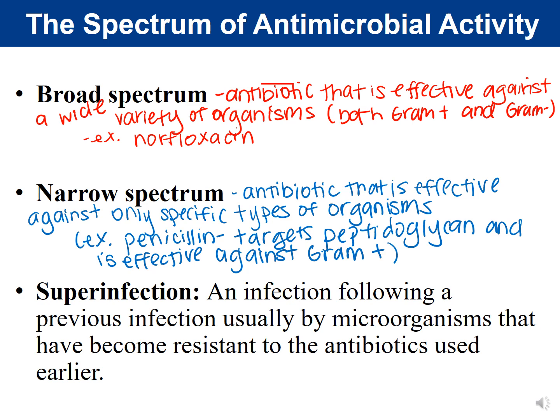Another example of a narrow spectrum from our lab work would be clindamycin — not only did it target gram-positive, but it was specific against Staph aureus. It did not target Bacillus megaterium or other bacteria; it was only effective against Staph aureus. As a result, clindamycin is used in topical acne products because Staph aureus's normal habitat is on the skin.